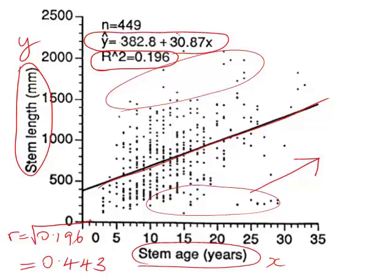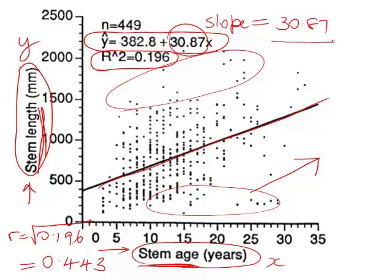The slope is the most useful bit. The slope here is 30.87. This tells us how much the stem length or y value will change when the x variable stem age increases by 1. So in this example, for each extra year that the age of the heather increases, the length of the stems will increase on average by about 30.87 mm. So that's what the relationship happens to be.